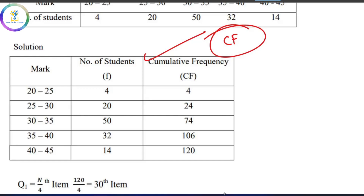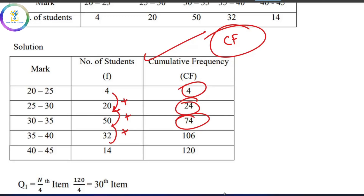The first cumulative frequency is 4. Then add 4 plus 20 to get 24. Then add 20 plus 30 to get 50 (corrected running total). Then 24 plus 50 is 74. Then add 32, then add to reach a total of 120. The quartile deviation formula is Q3 minus Q1 divided by 2.